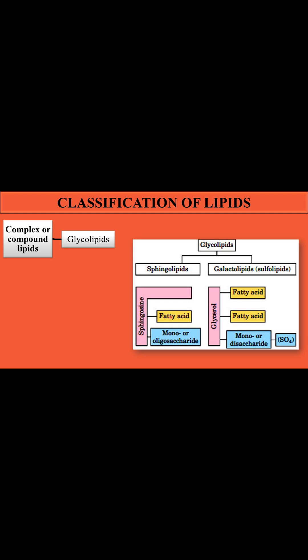In sphingolipids, sphingosine together with a fatty acid forms a simple lipid, and then an additional carbohydrate unit in the form of a mono- or oligosaccharide is attached. In galactolipids, the alcohol used is glycerol, attached with fatty acids, and the other group is a monosaccharide or disaccharide. Sometimes a sulfate group is also attached, and these are known as sulfolipids.